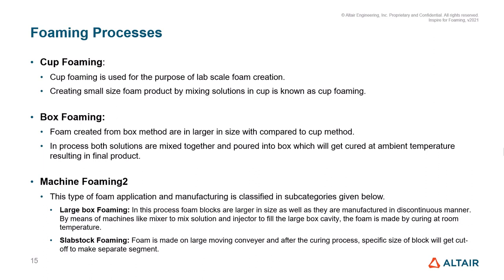In machine foaming, there are two subcategories: large box foaming and slab stock foaming. In the large box foaming process, foam blocks are larger in size and are manufactured in a discontinuous manner. By means of machines like a mixer to mix solutions and an injector to fill the large cavity, the foam is made by curing at room temperature.